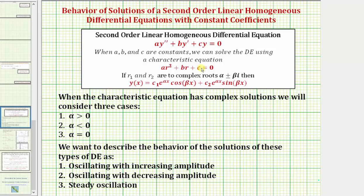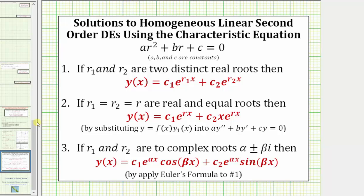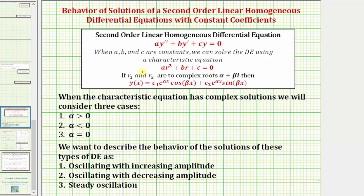And in this video, we're only concerned about describing the behavior of the solutions when the characteristic equation has complex solutions in the form of alpha plus or minus beta i, which means the general solutions would be in this form here. For review, remember, if the characteristic equation had two distinct real roots, the general solution would be in this form, and if it had two real equal roots, the general solutions would be in this form. But again, for this video, we're only concerned about when the characteristic equation has complex solutions in the form of alpha plus or minus beta i.